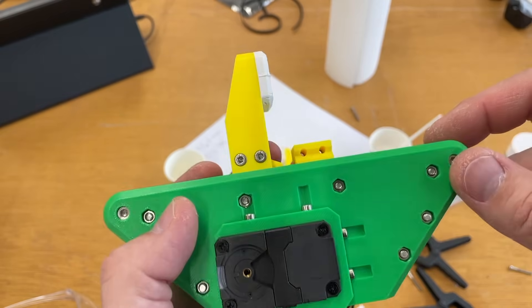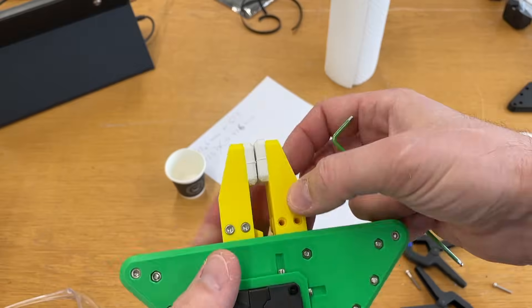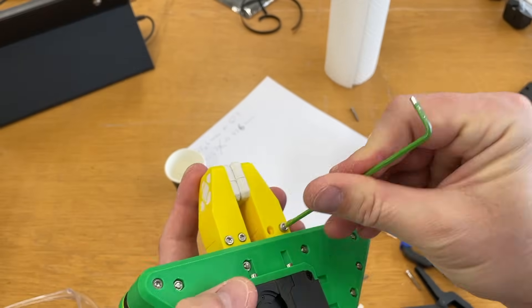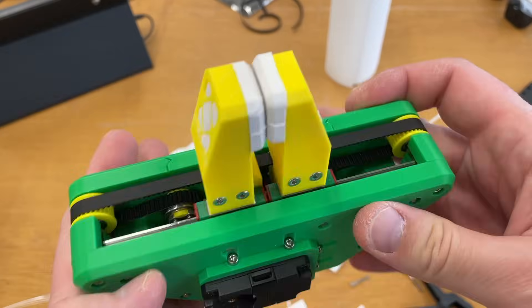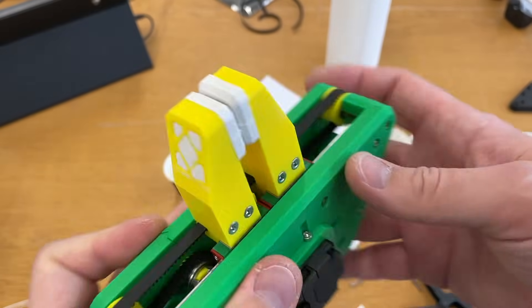As a next step we can put these fingers to the gripper and like this the gripper will be finished. And here I used 20 millimeter long screws. Now the gripper is finished. At least mechanical part of the gripper is finished.